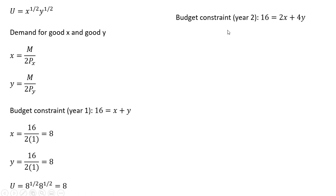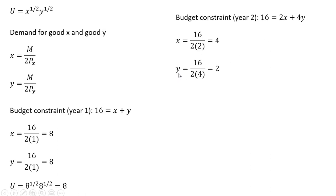Now let's say year two rolls around, and the price of good X is now $2 and the price of good Y is now $4. Let's calculate the utility maximizing consumption bundle. The consumer's income divided by two times the new price of $2 gives four units of good X, and the consumer will now buy two units of good Y. Utility at the higher price level is now lower: 2.828.